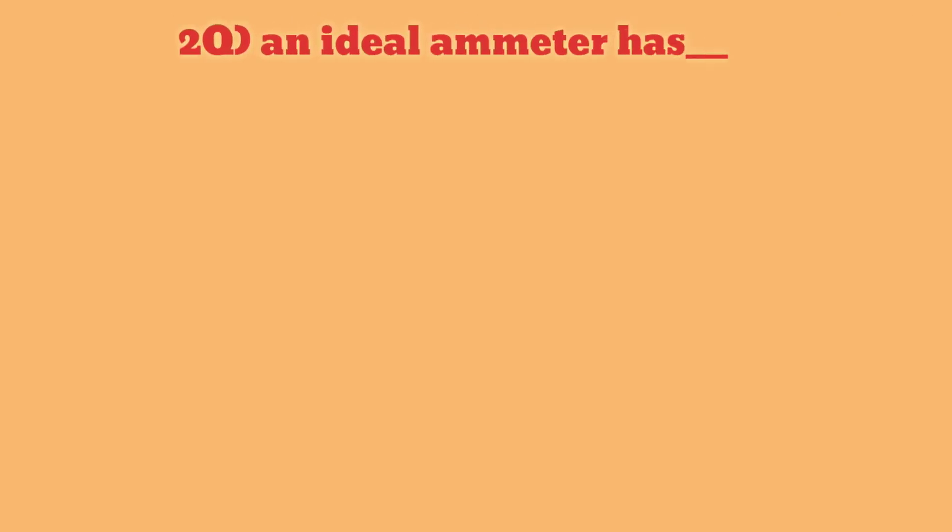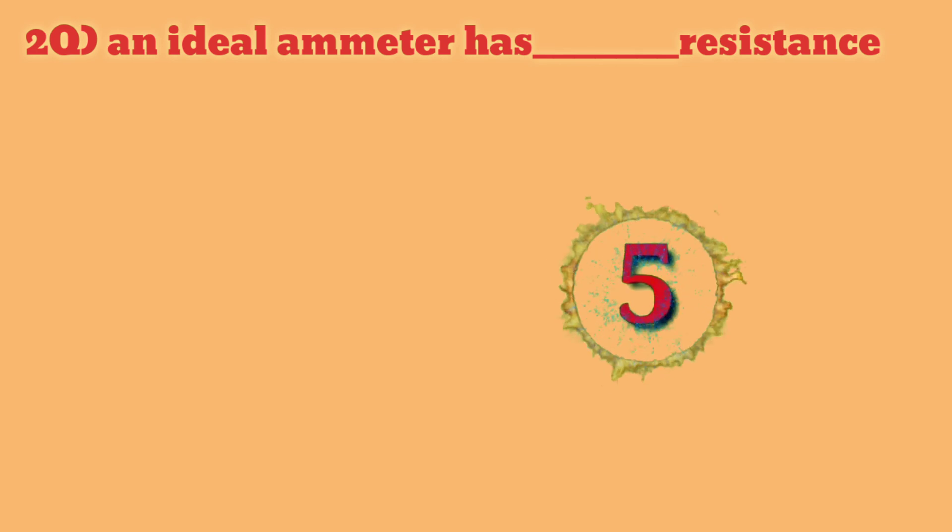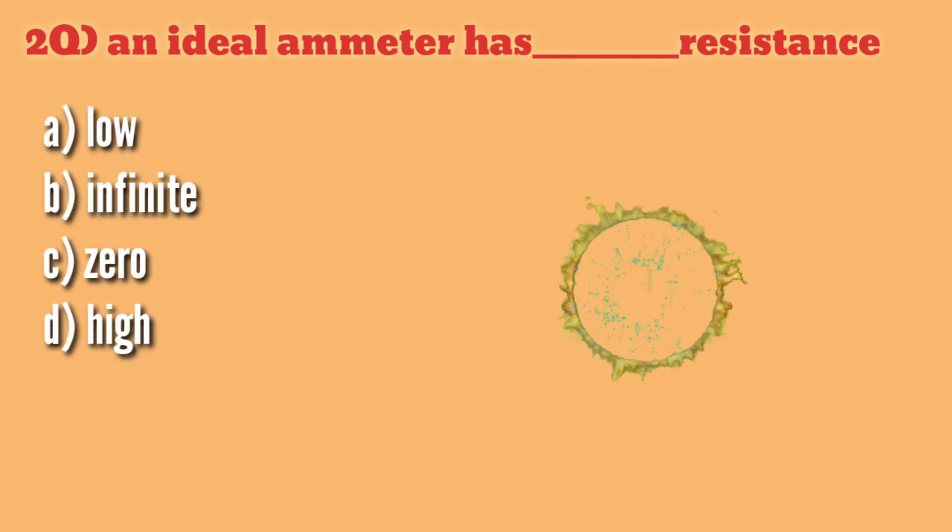Second question: An ideal ammeter has dash resistance. A) low, B) infinity, C) 0, D) high. Answer is B) infinity.